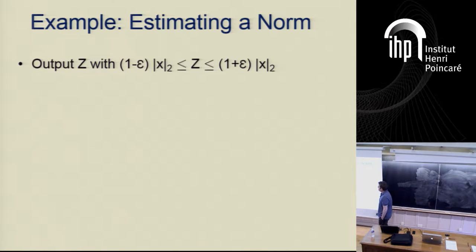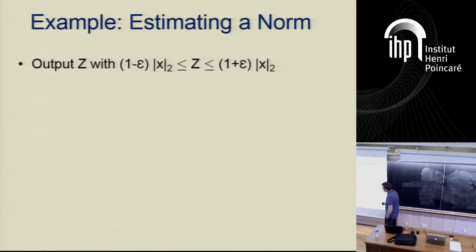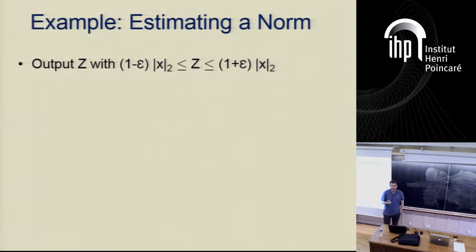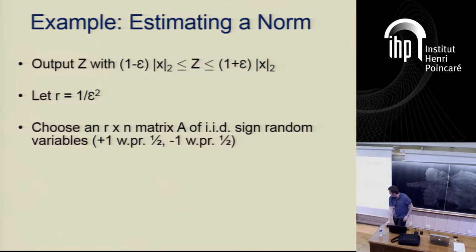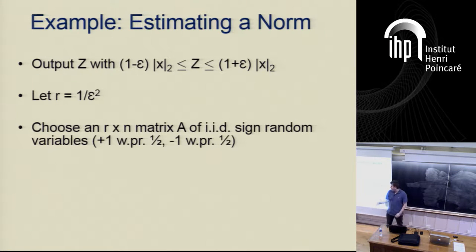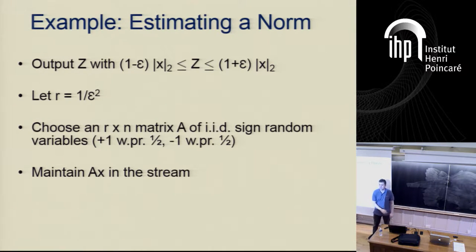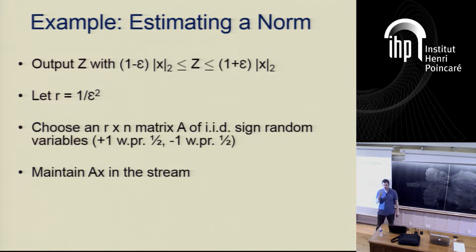As an example, suppose you want to estimate the Euclidean norm of a vector x, outputting a number z which is a 1±ε approximation. Set the parameter r to be 1/ε². Choose an r×n matrix A — a wide, fat matrix when ε is not too small — with entries that are iid ±1 random variables, each ±1 with probability one-half. All you do is maintain Ax in the stream. This reduces the dimension from n to r, and is easy to maintain because you see additive updates.